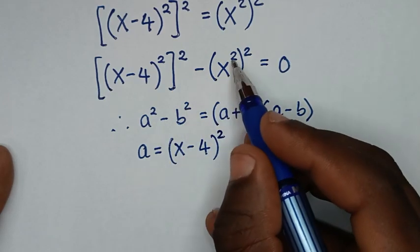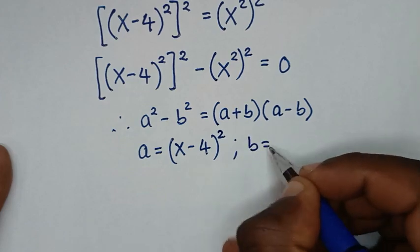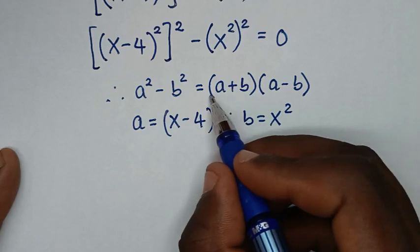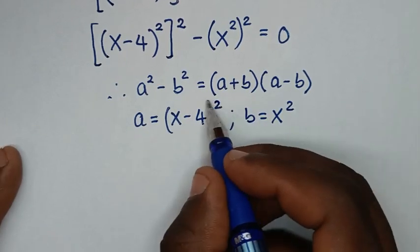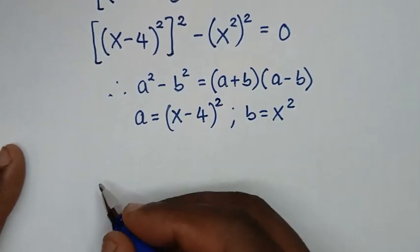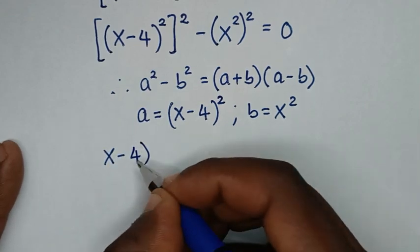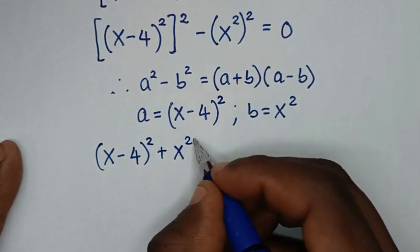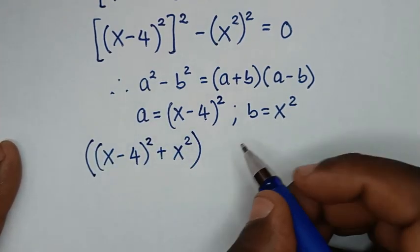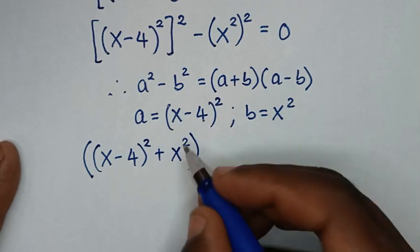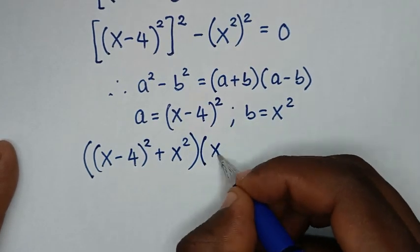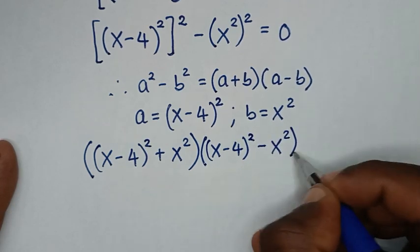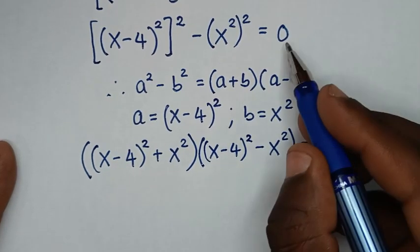When we compare b squared with (x squared) bracket squared, then b is equal to x squared. Applying the factored form of (a plus b)(a minus b): the first factor is (x minus 4) squared plus x squared, and the second factor is (x minus 4) squared minus x squared, all equal to 0.